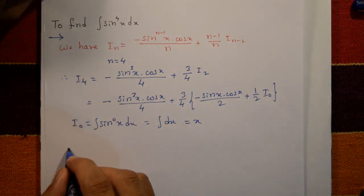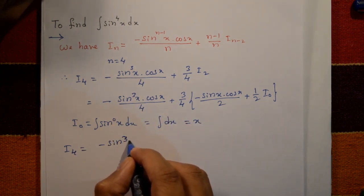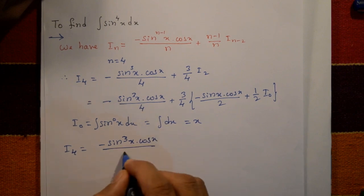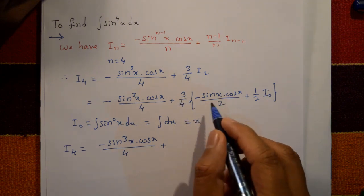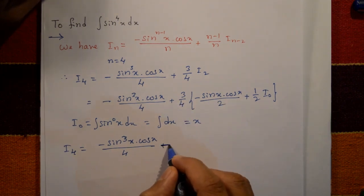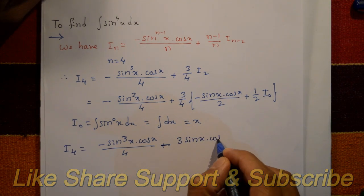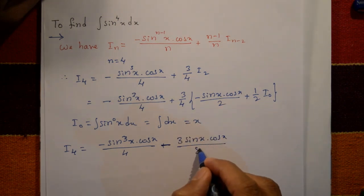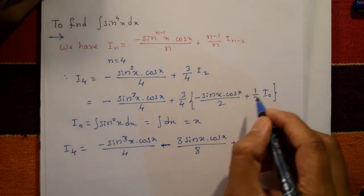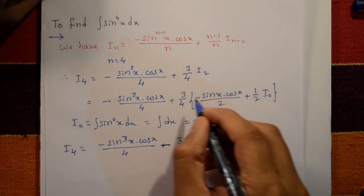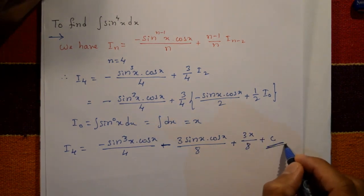Now substituting back, I₄ = minus sin³x · cos x divided by 4, plus (3/4) times [minus sin x · cos x divided by 2 plus x/2], which simplifies to minus sin³x · cos x / 4 minus 3 sin x · cos x / 8 plus 3x/8 plus C. This is the required solution.